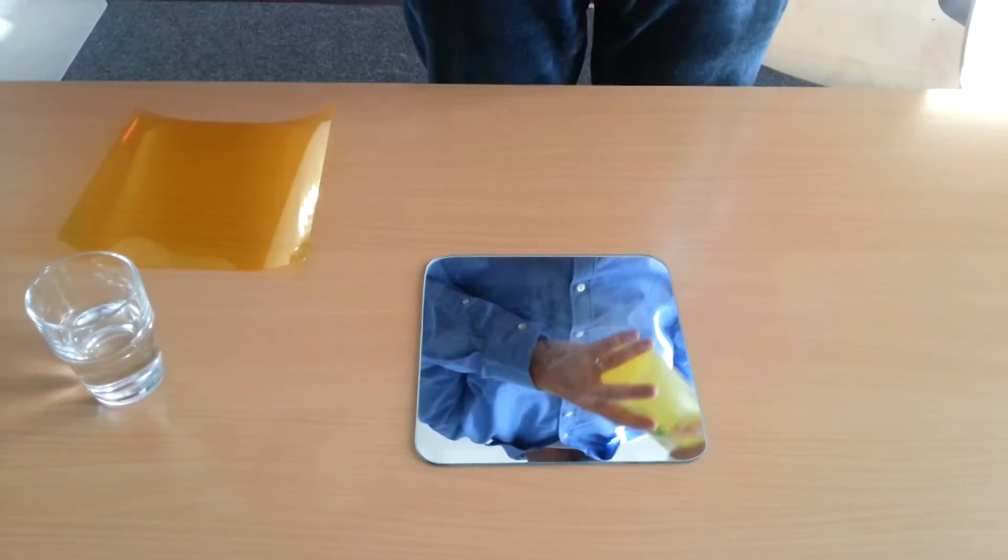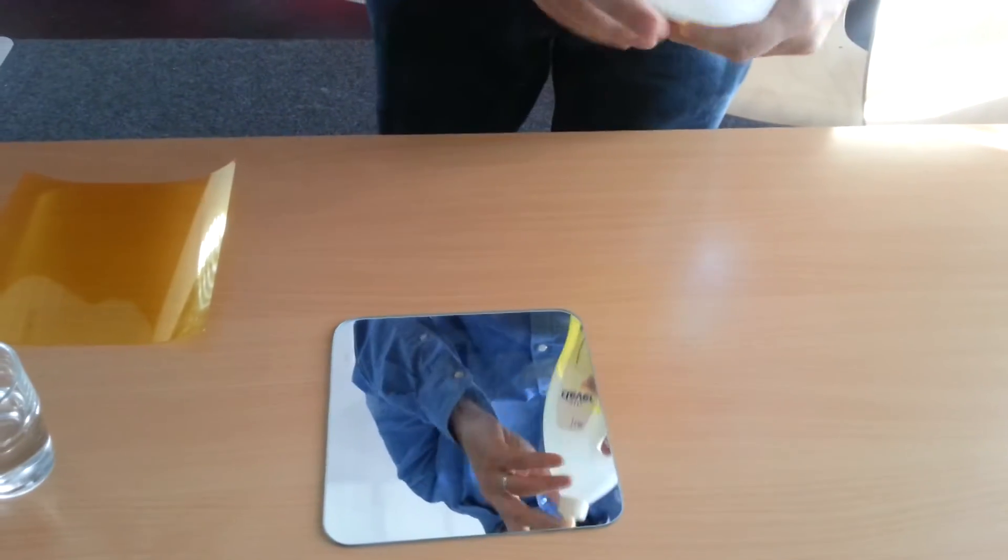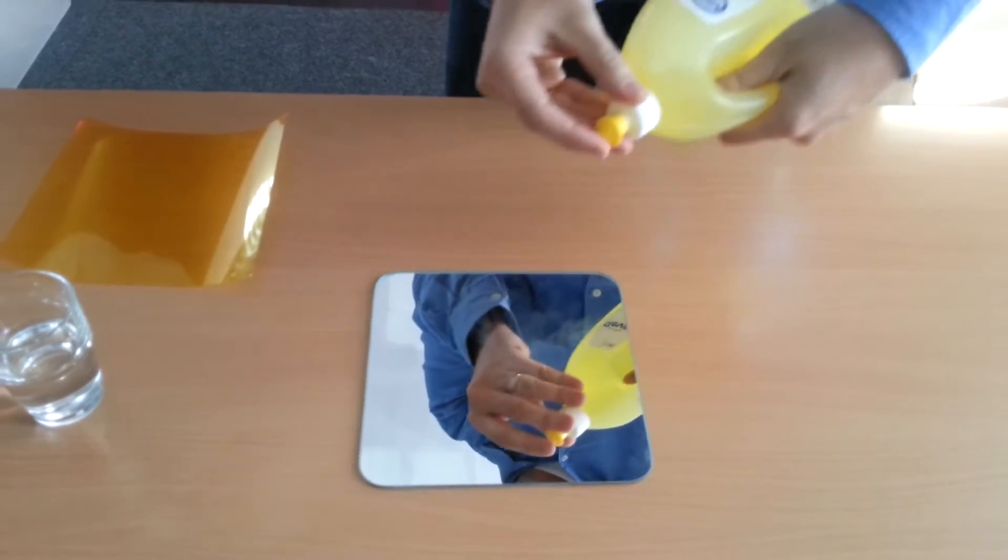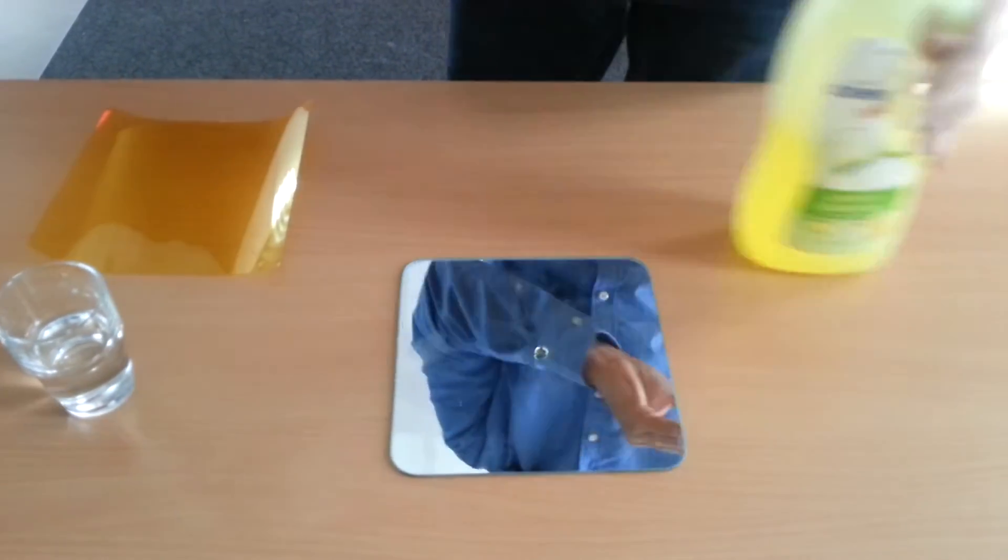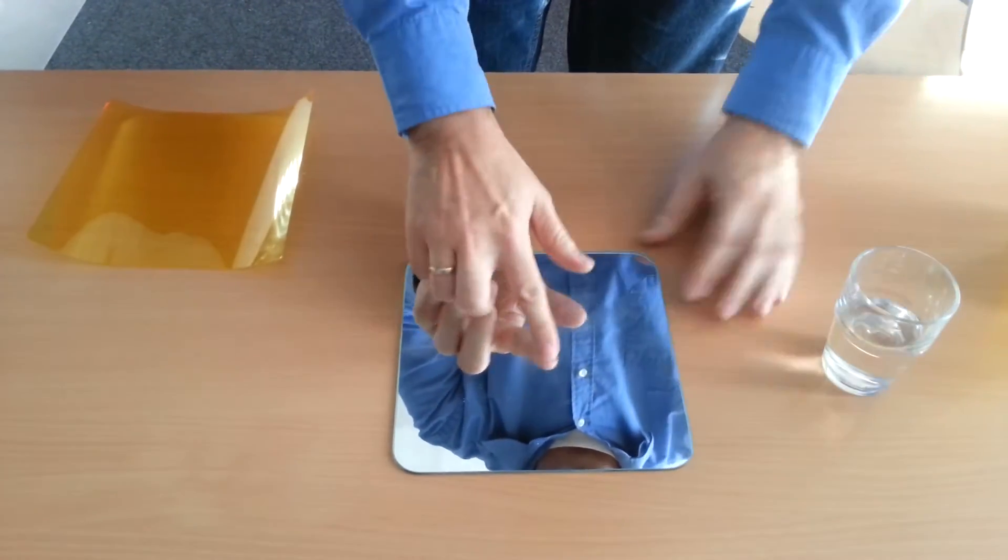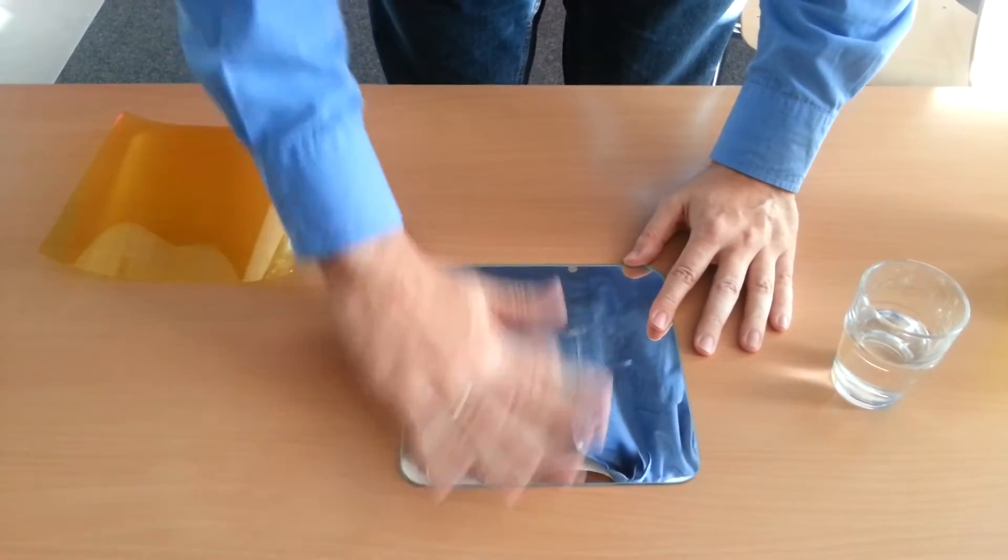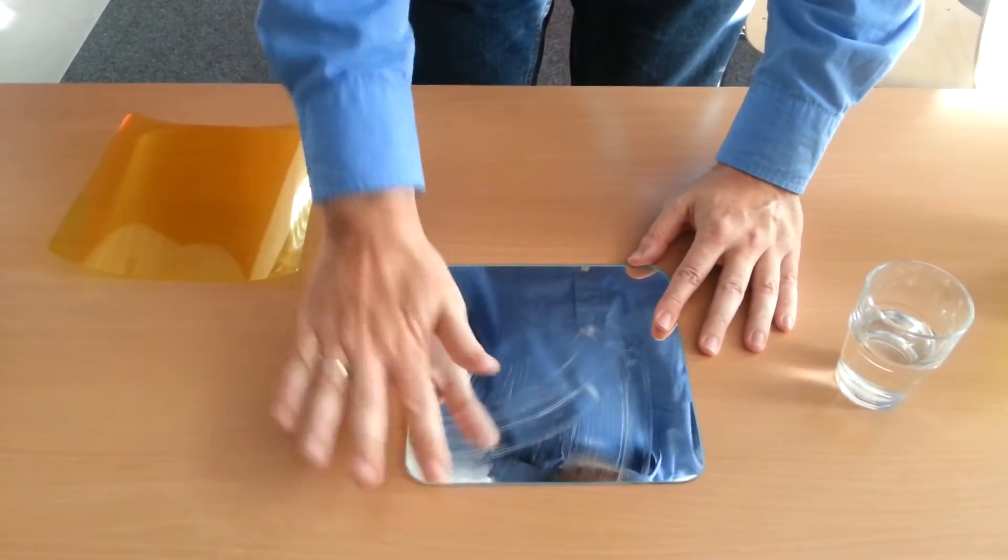We use some washing liquid just to prepare the surface - just one small drop, then some water, not much. This makes it easy to apply so that we can put the foil on easily.